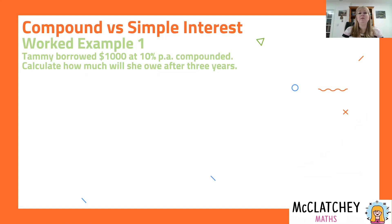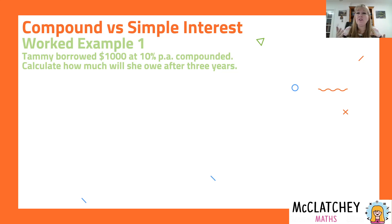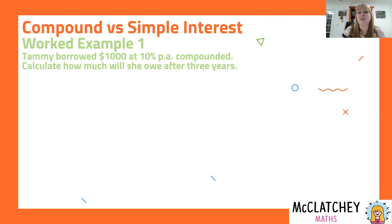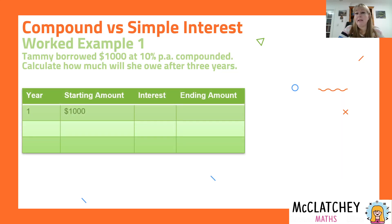Let's do some worked examples comparing simple interest to compound interest. Tammy borrowed $1,000 at 10% per annum, compounded. The very first question you should ask yourself when you see a loans or investment question is: is this simple or is it compound interest? If it's simple interest, you use the formula I = PIn from your formula sheet. But if it's compound interest, you need to do something different. We need to calculate how much she's going to owe after three years, and we'll set this up in a table.